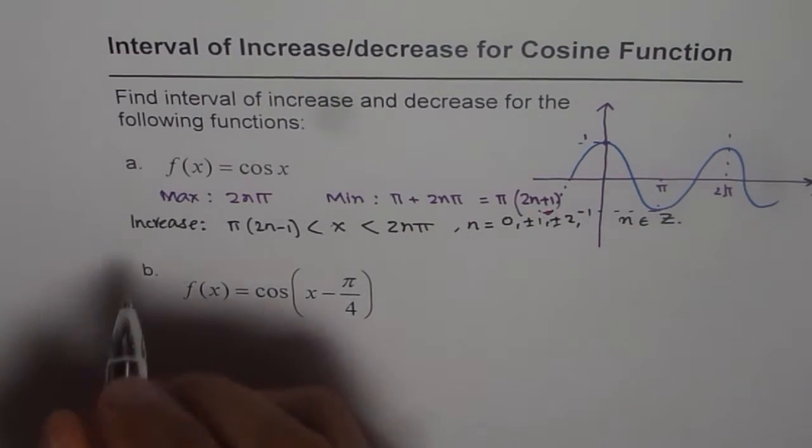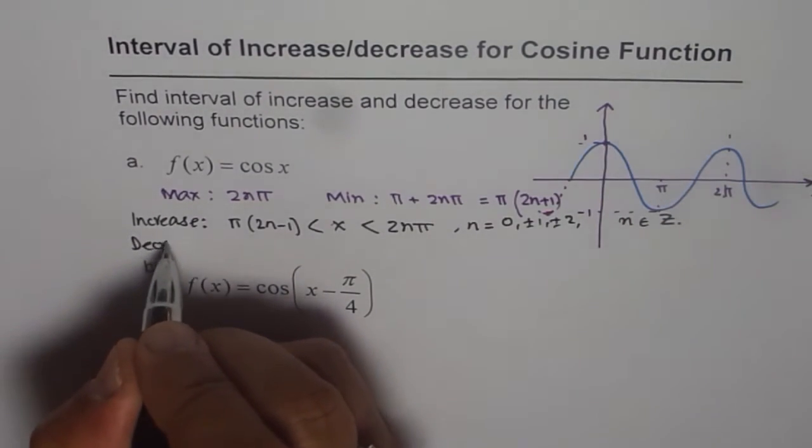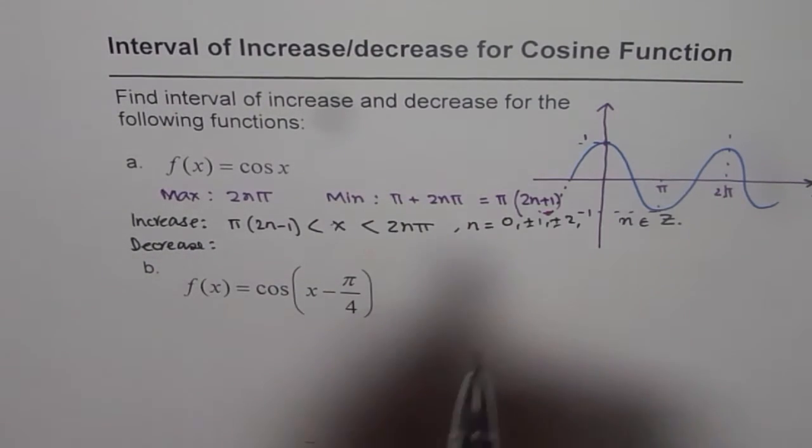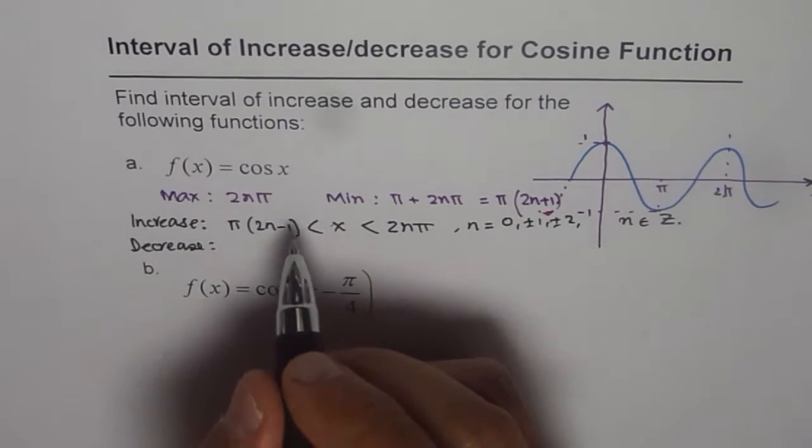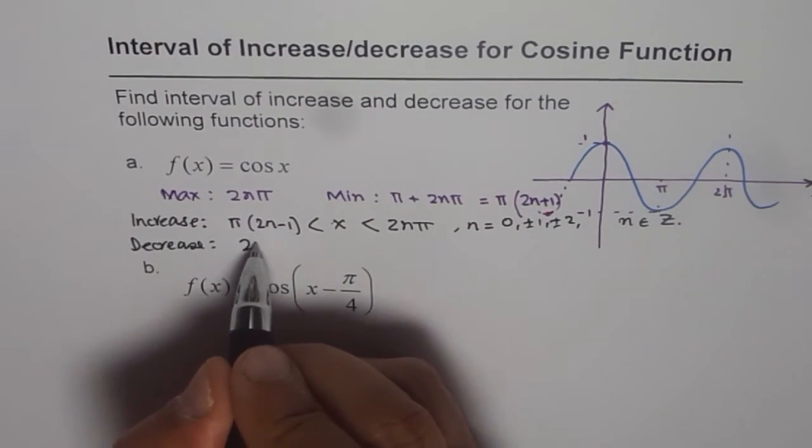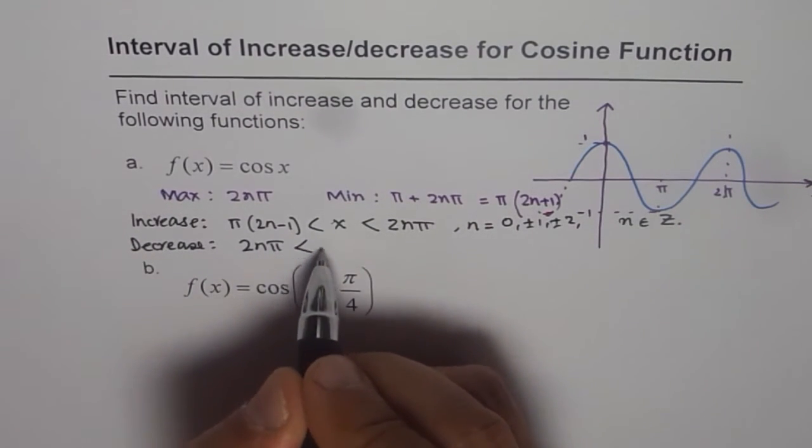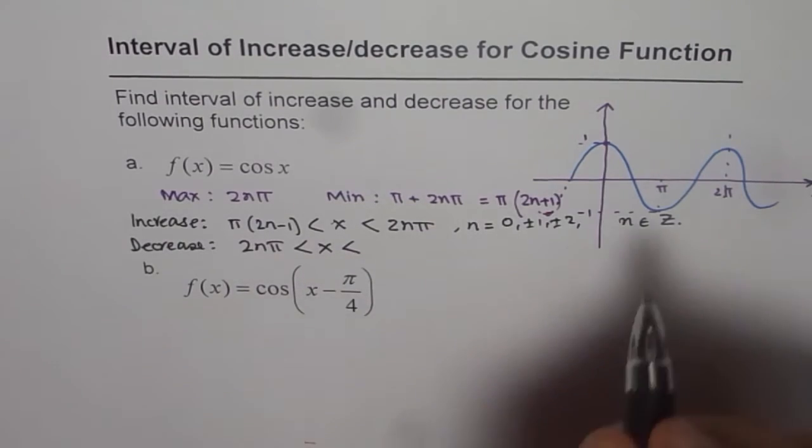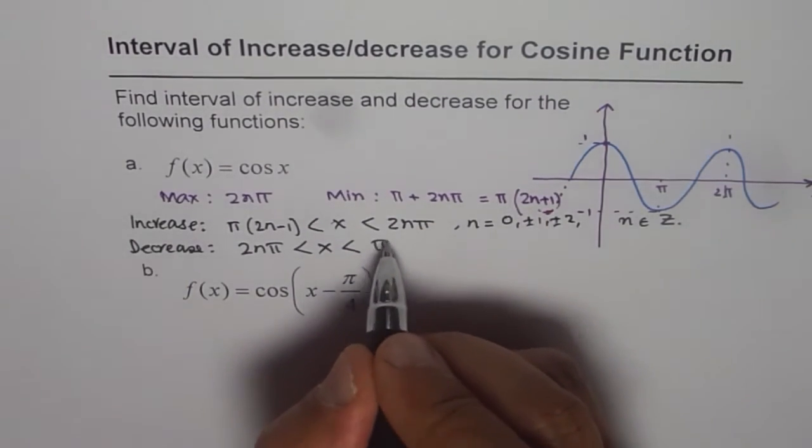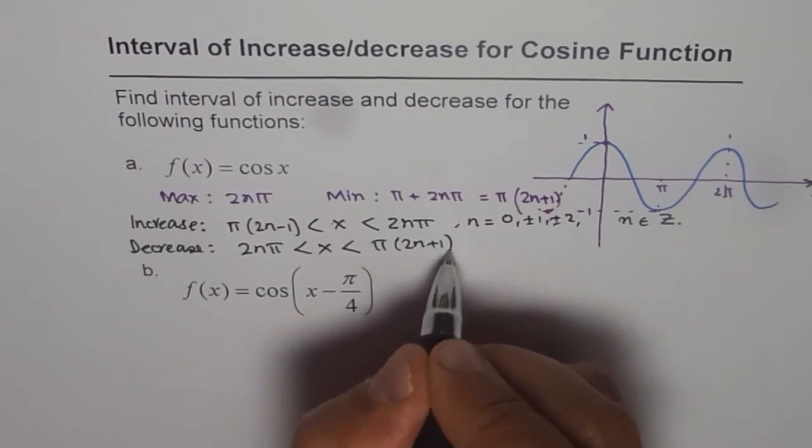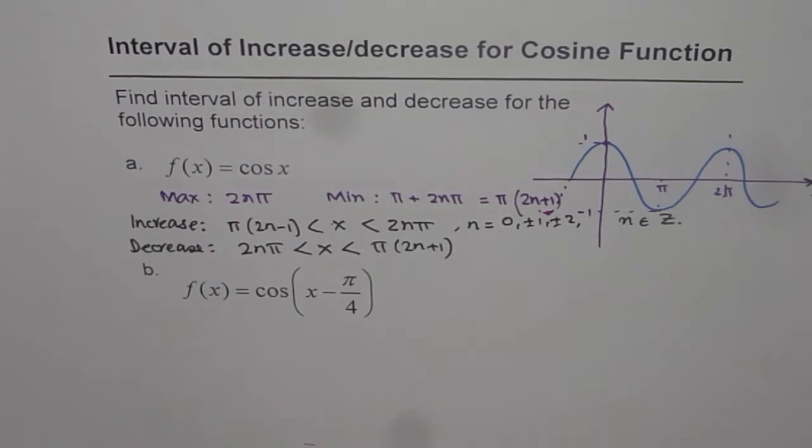Either way. So interval of decrease is from n pi, rather 2n pi, to 2n plus 1 pi. So you can say pi times 2n plus 1. So that is the interval of decrease for a cosine function.